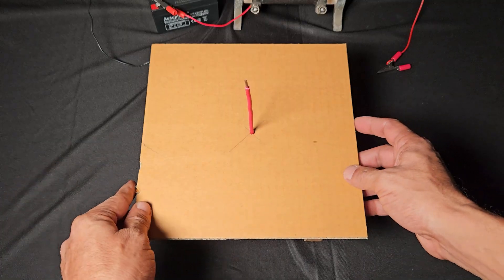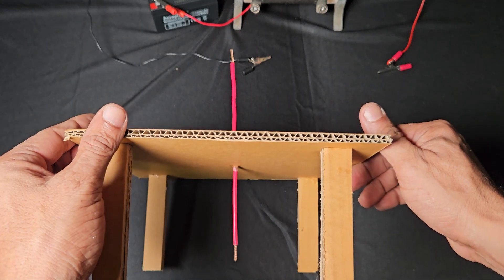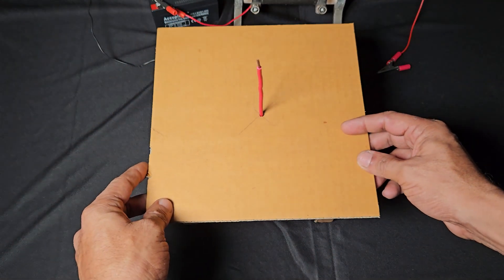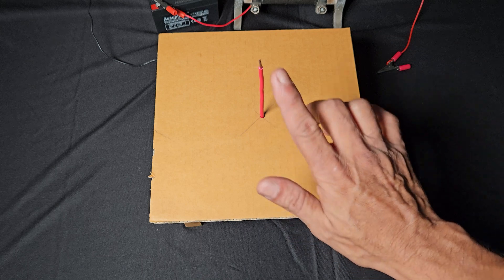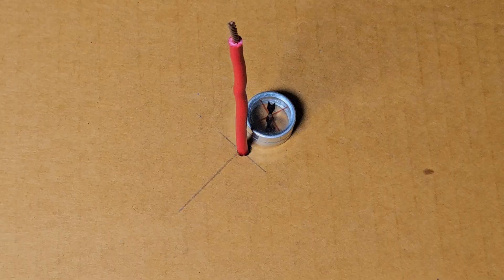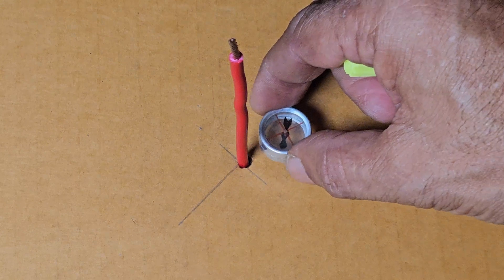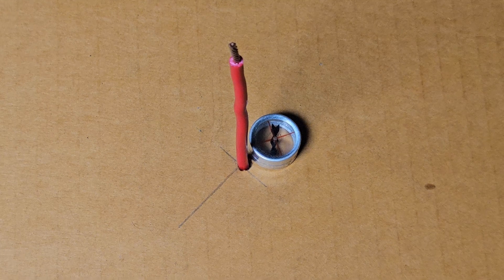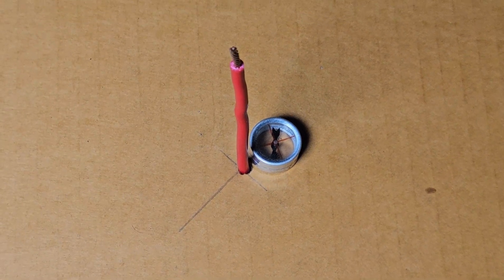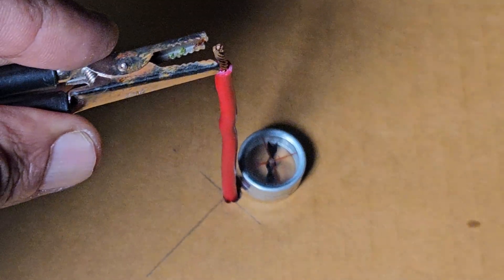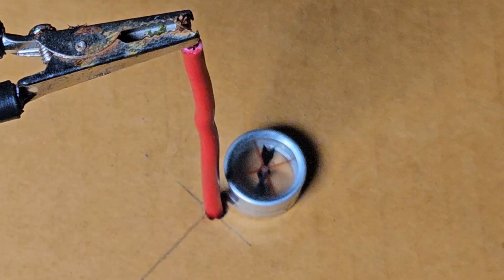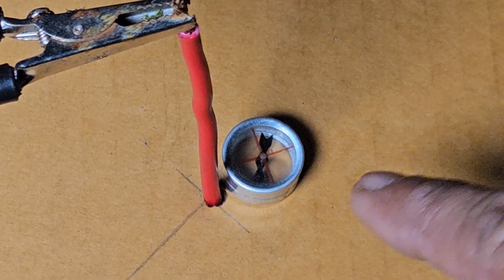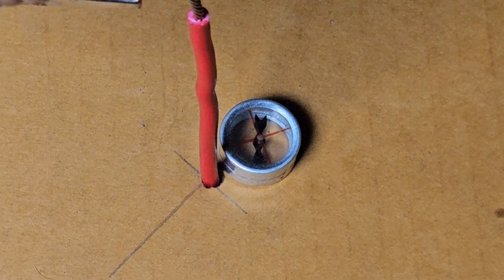This is Ampère's experiment setup. There is a straight wire here, red color wire, which is passing through this cardboard. Wire is perpendicular to the plane of the cardboard. So I am going to use this compass to detect the magnetic field produced by this wire when we pass current through it. Let me connect the other end of the battery here and there. Ever so slight deflection but the magnetic needle did deflect. Let me disconnect this and see. There. When I connect it, see the deflection.